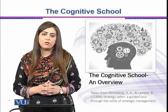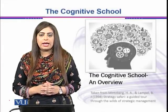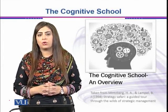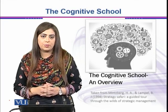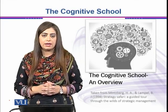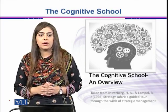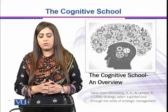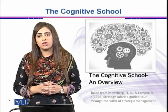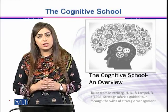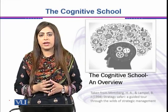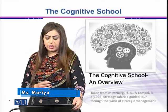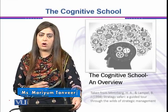Dear students, we were having an overview of the cognitive school of thought and the cognition process itself. In this video we will have an overview of one of the different aspects of cognition — the thinking process — and we will see how it impacts the decision making of a strategist. We would first see what cognition is and its different aspects in general human beings, and then relate it with managers and strategists of the organization.